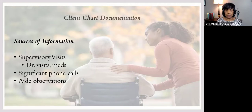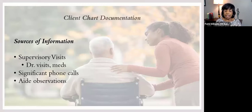If someone came in and looked at that chart, they'd see you admitted them in September, and then in December someone went back to do a visit. You don't have to rewrite all that information once it's on the supervisory visit form, but you would indicate it's done, in order, and in place.